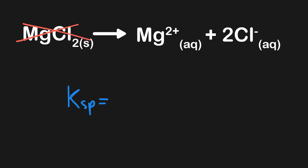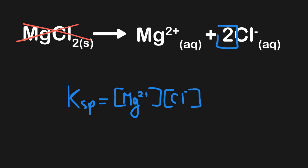Ksp values are equal to products over reactants. We don't actually have any reactants to include here, so we'll have the concentration of Mg²⁺ times the concentration of Cl⁻. However, Cl⁻ has a stoichiometric coefficient of 2 to balance the reaction. In this case, we take that number and put it as an exponent for its particular concentration. So the correct Ksp for MgCl₂ is the concentration of Mg²⁺ times the concentration of Cl⁻ squared. Regardless of the K value, if you have a stoichiometric coefficient, it always becomes an exponent attached to the concentration to which it pertains.